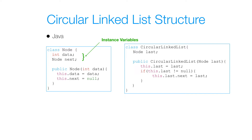Let's look at the node class. In our node class we have our data and we have a reference next. Then I have my constructor, which takes an argument data and initializes my instance variable data with that argument's data. I also have my next reference, which I initialize to null regardless.